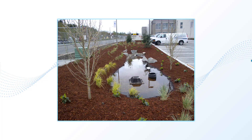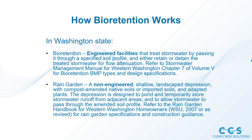Another important aspect of bioretention facilities is evapotranspiration. In Washington State, these engineered facilities treat stormwater by passing it through a specified soil profile and either retain or detain the treated stormwater for flow attenuation. A rain garden is a little different — it's a non-engineered shallow landscape depression with compost-amended native soils or imported soils and adapted plants. A rain garden is not quite as intensely designed as bioretention, using those natural elements. We reference the different handbooks, including the Western Washington Homeowner's Guide from 2007, for specifications.